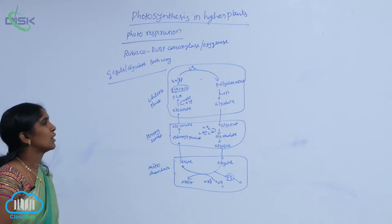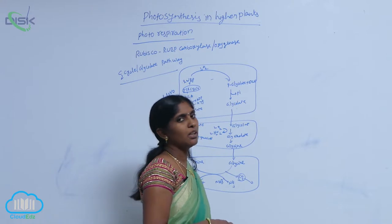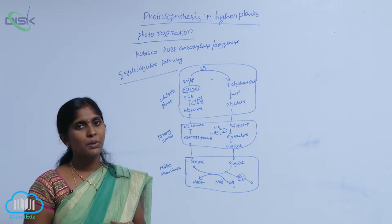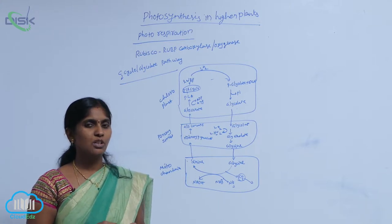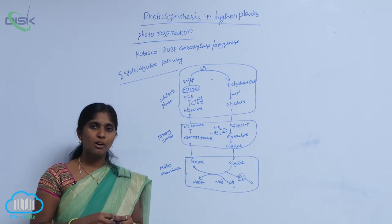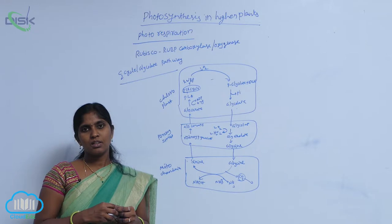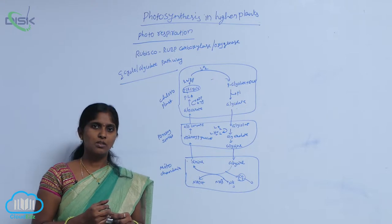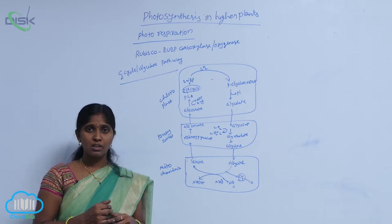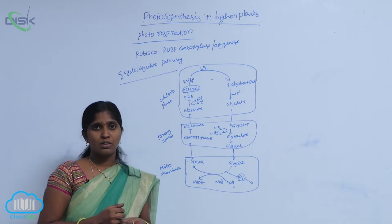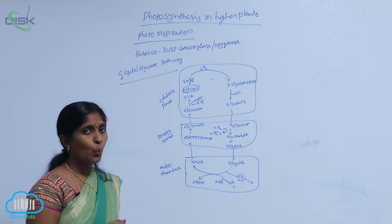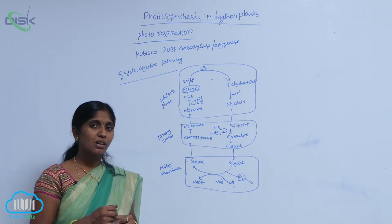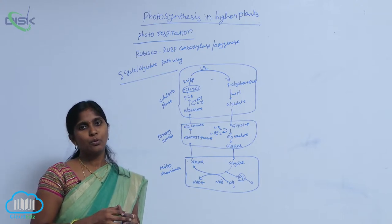Photorespiration. Plants normally go for photosynthesis, during which carbon dioxide is reduced into carbohydrates and oxygen is released. But plants also use O2 and release CO2. In what condition? When CO2 is less in the atmosphere, plants go for photorespiration.